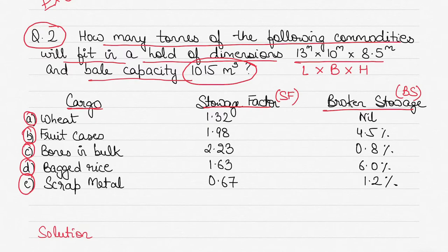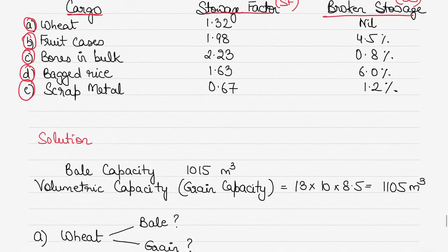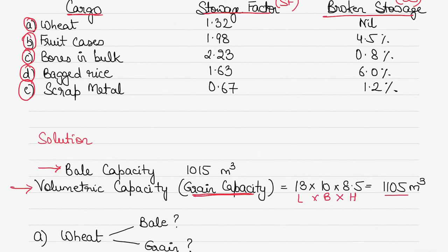Before solving the question, it's important to understand what bale capacity and grain capacity are. In this question, the bale capacity is given as 1015 cubic metres. You can also calculate the other volumetric capacity — which I'm calling grain capacity — by multiplying the given length by breadth by height of the cargo hold. So what is the difference between grain capacity and bale capacity?